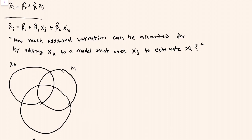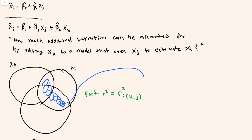What we're interested in is the area uniquely explained by x-k, which I'll express as a part correlation. The general notation might be r-squared for i: the proportion of variation in i explained by k uniquely. To find it, we figure out what the whole area is — the proportion of variation in i explained by j and k together.